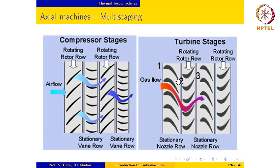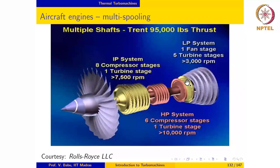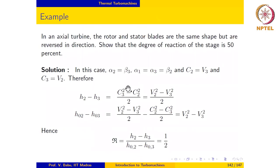To summarize, alpha 2 equals beta 3 and alpha 1 equals alpha 3 equals beta 2 is what we have if the blades are symmetric but just reversed in direction. That is what we have written here: alpha 2 equals beta 3 and alpha 1 equals alpha 3 equals beta 2.